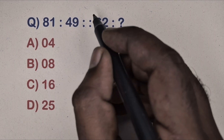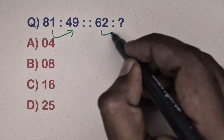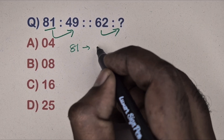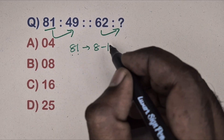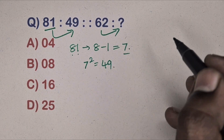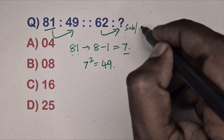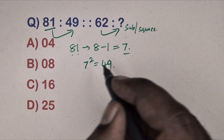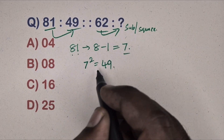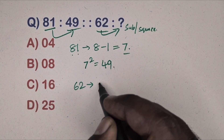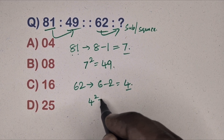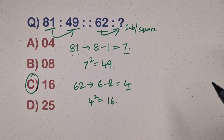Next question: 81 is related to 49, 62 is related to which number? Take 81, subtract individual digits: 8 − 1 = 7, then 7² = 49. This is the subtraction and square method. Same way, take 62, subtract digits: 6 − 2 = 4, then 4² = 16. Option C is the correct answer.